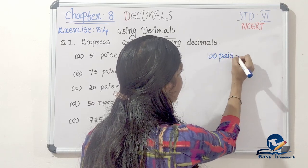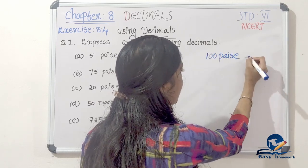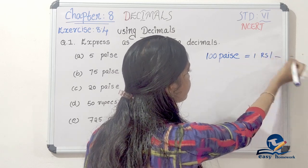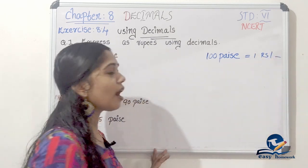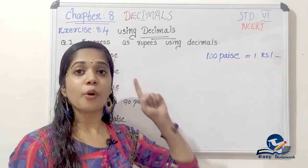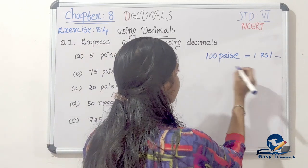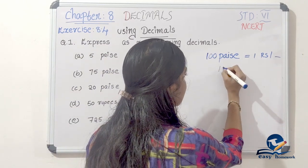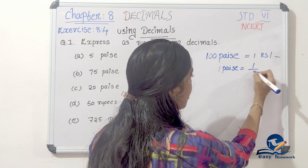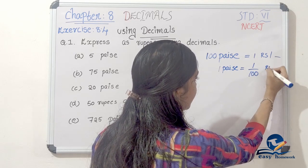100 paise equals 1 rupee. So, 1 paise equals 1 by 100 rupees.